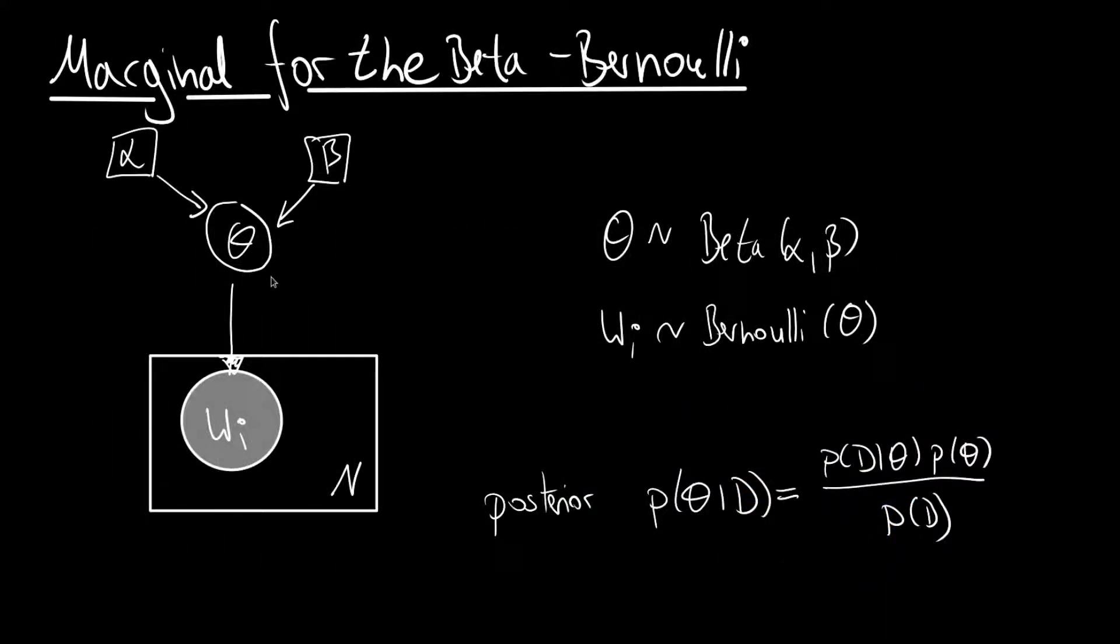Recall for the posterior, we made the theta parameter to the Bernoulli distribution a latent random variable, and we modeled it as a beta distribution with alpha and beta hyper parameters, and then we had our W_i observations.